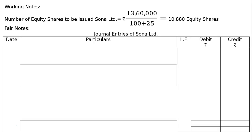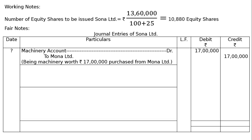Journal entries in the books of Sona Limited: First entry — Machinery Account debited to Mona Limited, being machinery worth ₹17 lakhs purchased from Mona Limited. The amount in both debit and credit columns will be ₹17 lakhs.